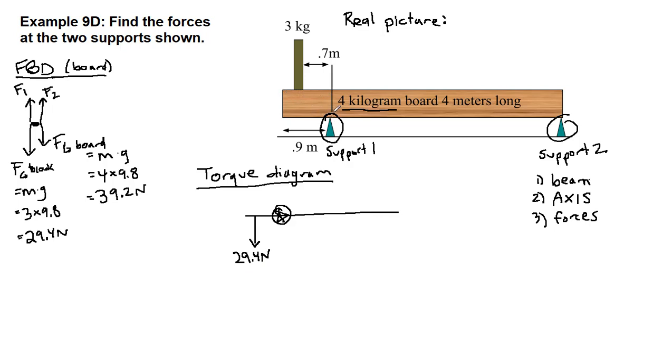If we continue along the board, this is where our axis is. Further past the axis, we at some point get to the halfway point for the board. That is where the force of gravity on the board itself will be acting, the 39.2 newtons. And then way at the far end of the board, that's where support two is located. And so F2 will be put there pointing up because it's pushing up on the board.